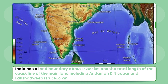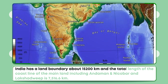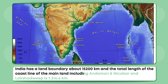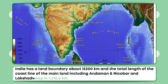India has a land boundary of about 15,200 kilometers, and the total length of the coastline of the mainland including Andaman, Nicobar and Lakshadweep is 7,516.6 kilometers.